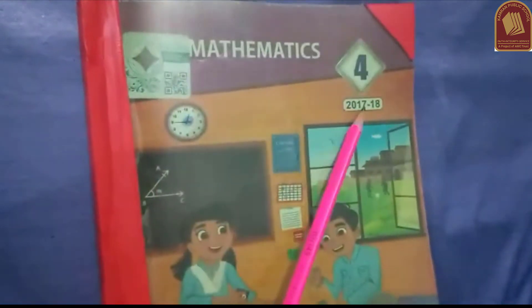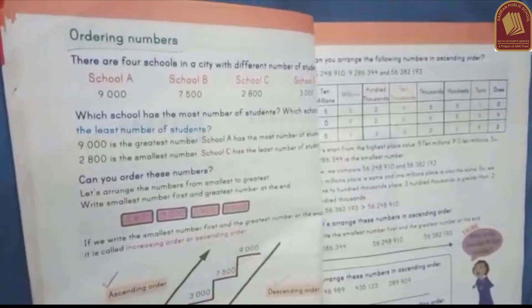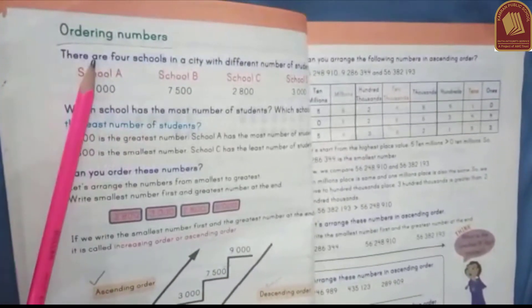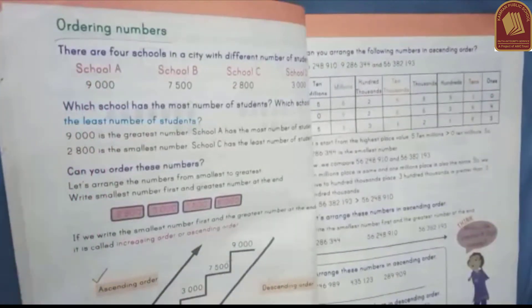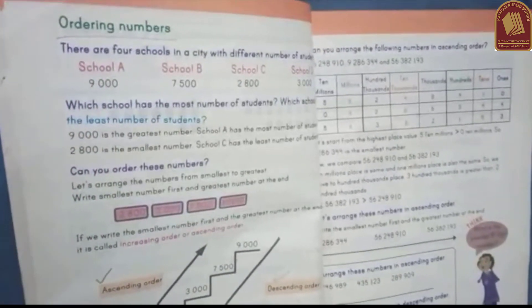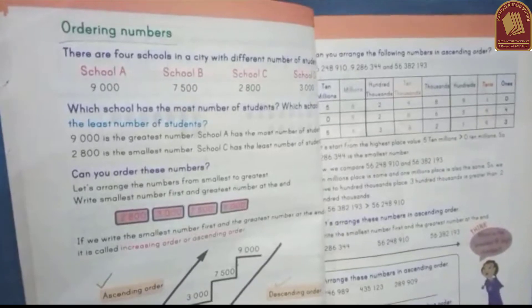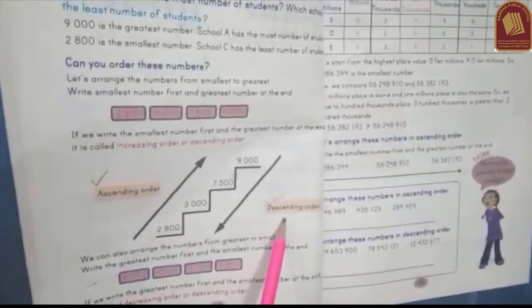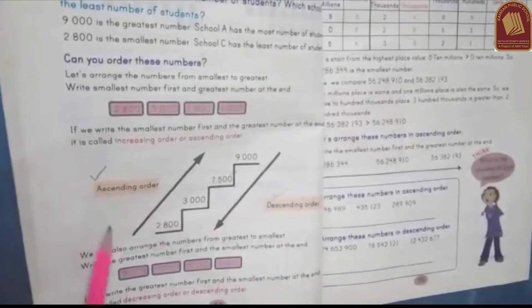Assalamu alaikum dear students, we are going to learn the next lesson of mathematics class. Take out page number 18. We have two methods: number one is ascending order, number two is descending order.